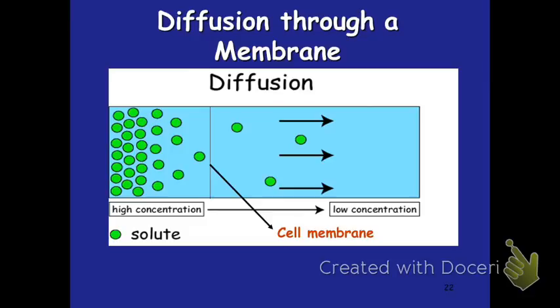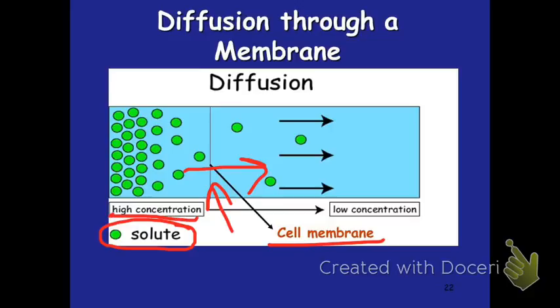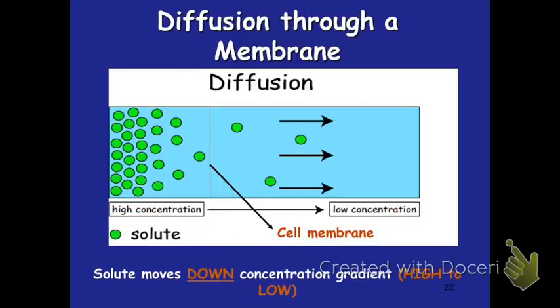Here is another example of diffusion through the membrane. You can see a high concentration of solute like sugar or salt on one side of the membrane, moving across the cell membrane into the cell because we're going from a high concentration to a low concentration. We are not using energy — this is what naturally wants to happen. This means the solute is moving down the concentration gradient — think of going down the hill from a high concentration to a low concentration. This does not require energy.